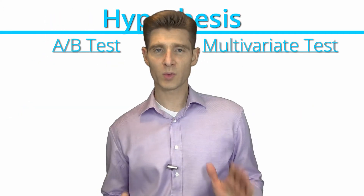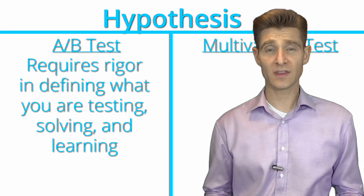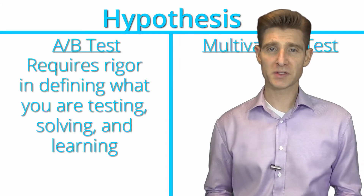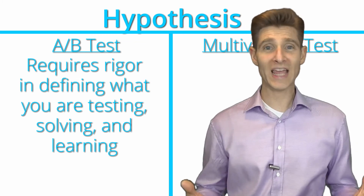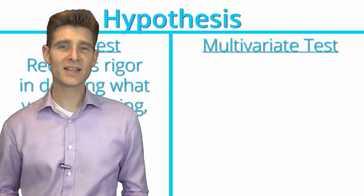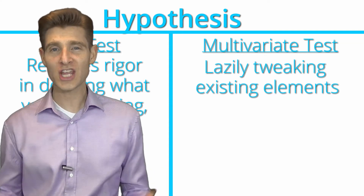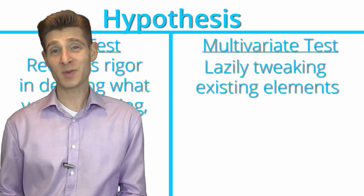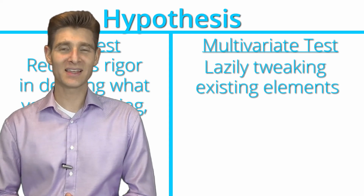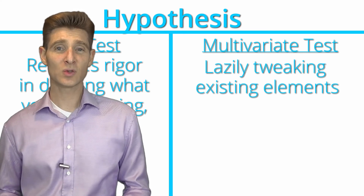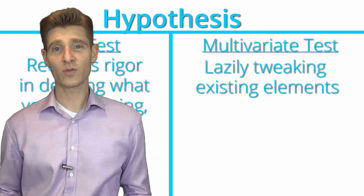Another factor to consider is the hypothesis. With an A/B test, the hypothesis requires rigor — you have to define the business question or problem you're solving, and answer it with a strong hypothesis and strong variations. The multivariate test, on the other hand, uses what I'd call a lazy hypothesis. You already have existing elements and instead of challenging your site to make a better experience, you're asking how can I tweak this element? It's much easier, but it can lead to lazy testing where you're not getting the full value out of your testing program.